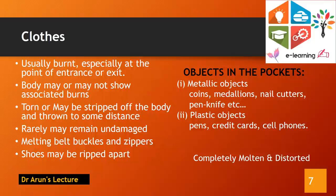Coming to objects present in the individual's pockets — most commonly metallic and plastic objects. Examples of metallic objects include coins, pen knives, or nail cutters, which appear to be molten and fused together as a result of the magnetizing effect of the lightning injury, and may serve as a clue to exposure. Plastic objects like a pen, credit card, or cell phone may be completely molten and distorted.